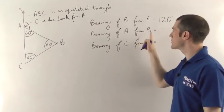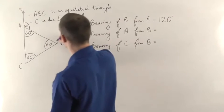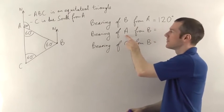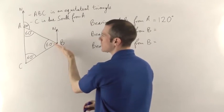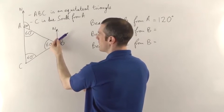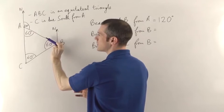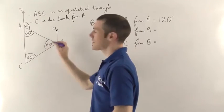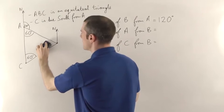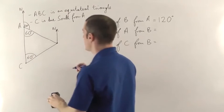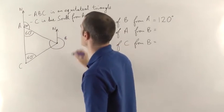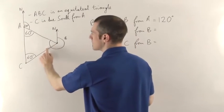Second one: we want the bearing of A from B. Focus on where you're going from — we're going from B, so you need a north line at B; draw one in. The bearing of A means we're going towards A from B, but it must be clockwise from north. In this case you go all the way around the outside, past the line towards C, until you're pointing towards A — that full angle all the way around.